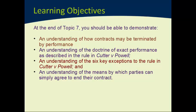We're going to start with termination by performance, which is surprisingly more complicated than people might expect, because it sounds pretty easy — you perform the requirements under the contract and then the contract is over, it's terminated, it's been completed. But it is a little bit more complicated than that. We'll start by talking about the Doctrine of Exact Performance, established in Cutter v Powell, and then look at the exceptions to that rule. At the end of the lecture we'll look at the five different ways parties can simply agree to end a contract.